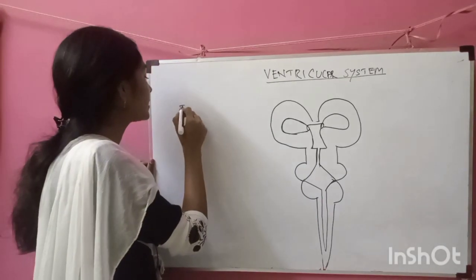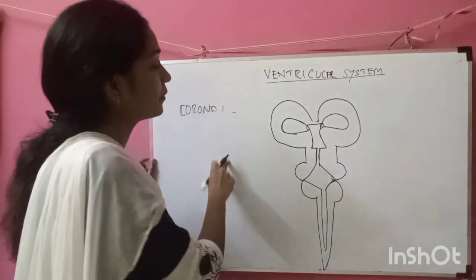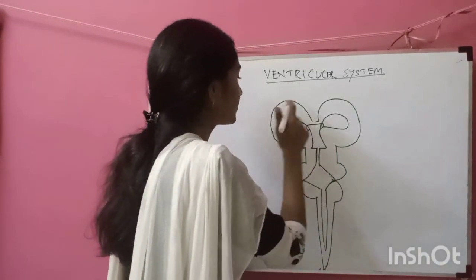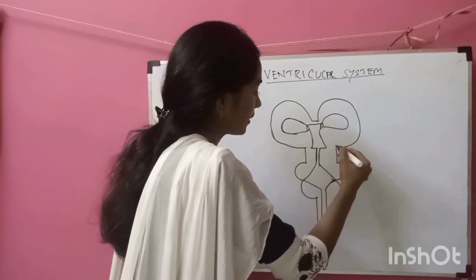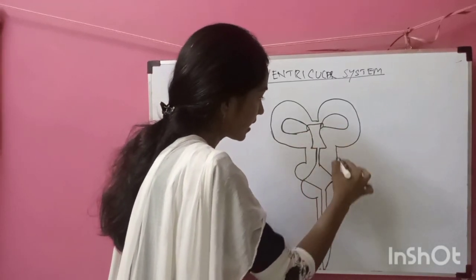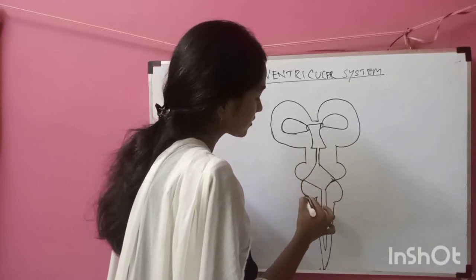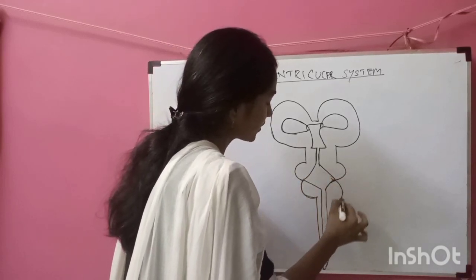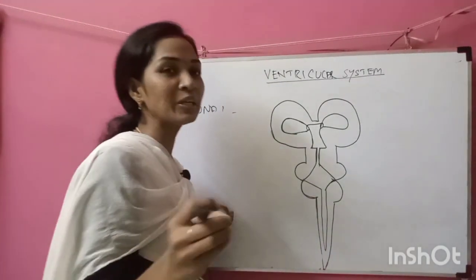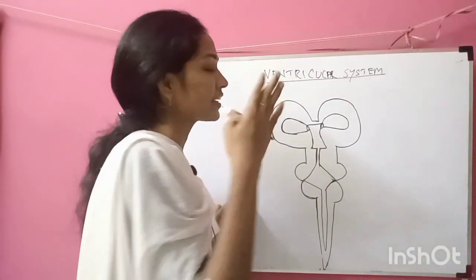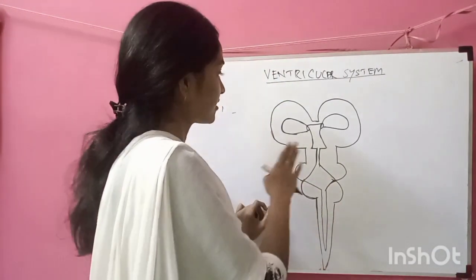This is the coronal section of your brain. This is the cerebrum. This extension is our midbrain. Then this is the pons, this is the medulla, and finally our spinal cord. Now I am going to tell you the important ventricles present in the central nervous system.